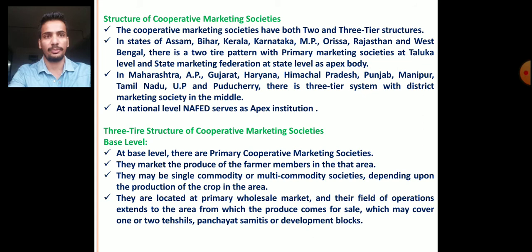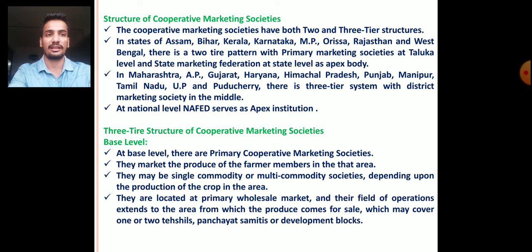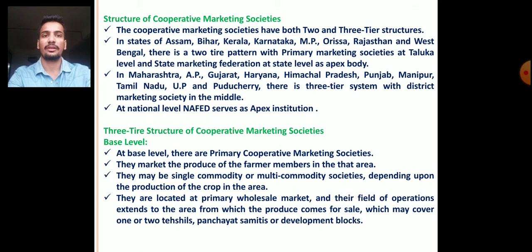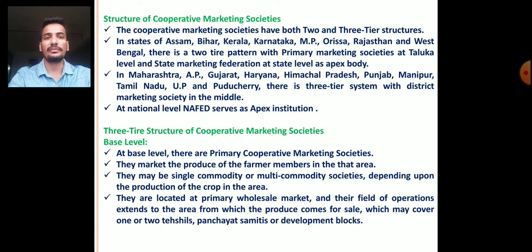In states like Maharashtra, Andhra Pradesh, Gujarat, Haryana, Himachal Pradesh, Punjab, Manipur, Tamil Nadu, Uttar Pradesh, and Pondicherry, a three-tier structure is adopted. In three-tier structure, the first tier is primary agriculture cooperative societies (PACs), the second is district cooperative society, and the apex body is state cooperative societies. At the national level, NAFED — the National Agricultural Cooperative Marketing Federation — serves as the apex institution in cooperative marketing societies.